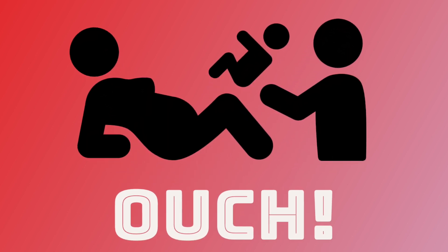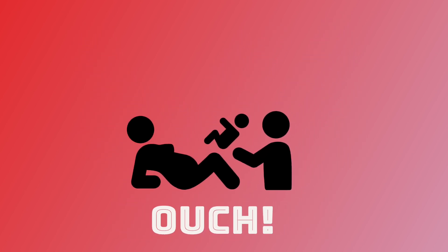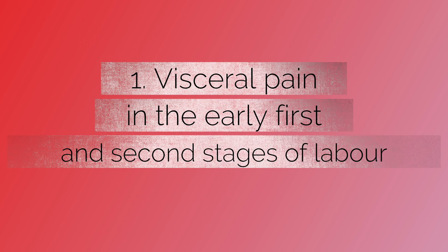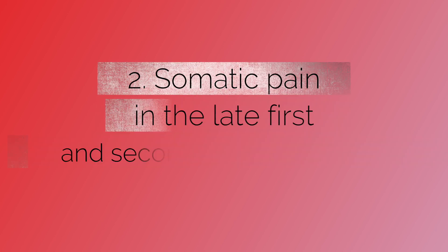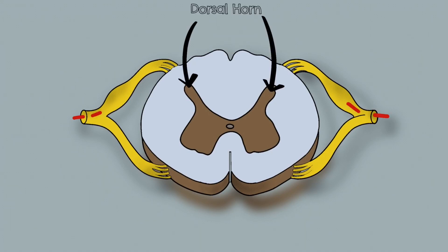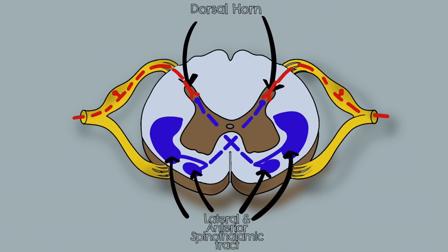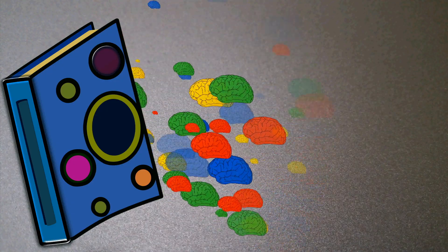Labour is an incredibly painful personal experience. The pain experienced during labour is made up of two key components: visceral pain, which occurs during the early first and second stage of labour, and somatic pain, which occurs during the late first and second stage of labour. Both visceral and somatic nerve impulses pass to dorsal horn cells where they are processed and transmitted to the brain via the spinothalamic tract. This transmission to the hypothalamic and limbic systems accounts for both the emotional and autonomic responses associated with pain in labour.